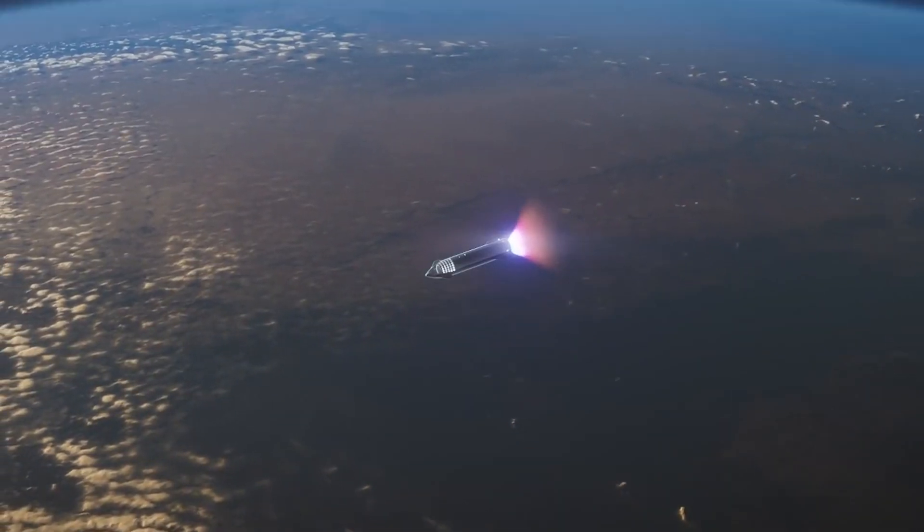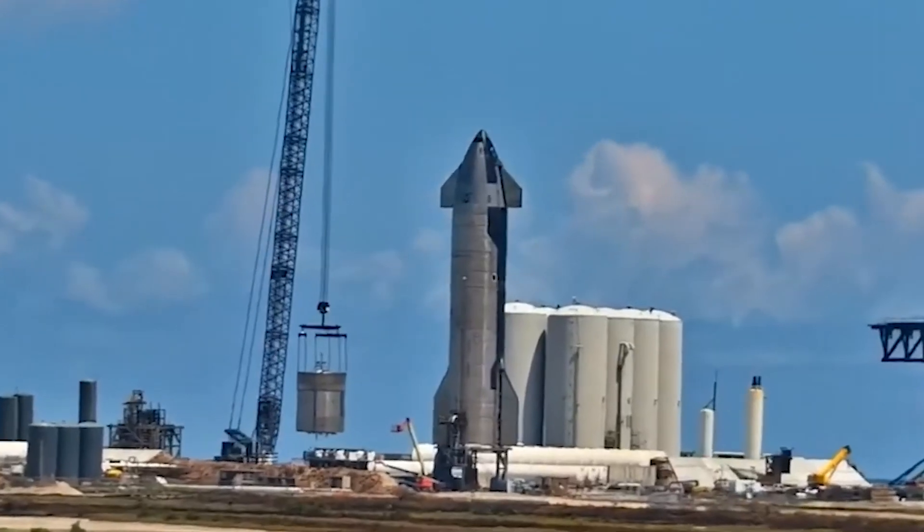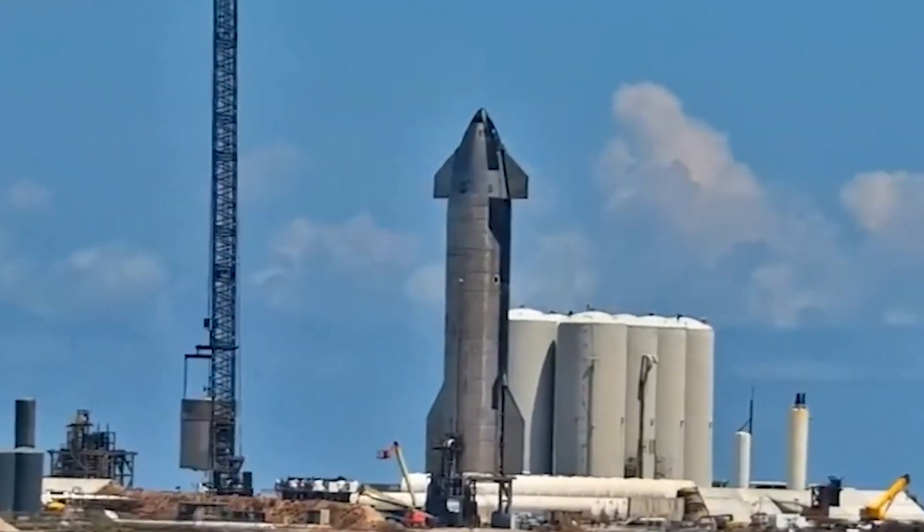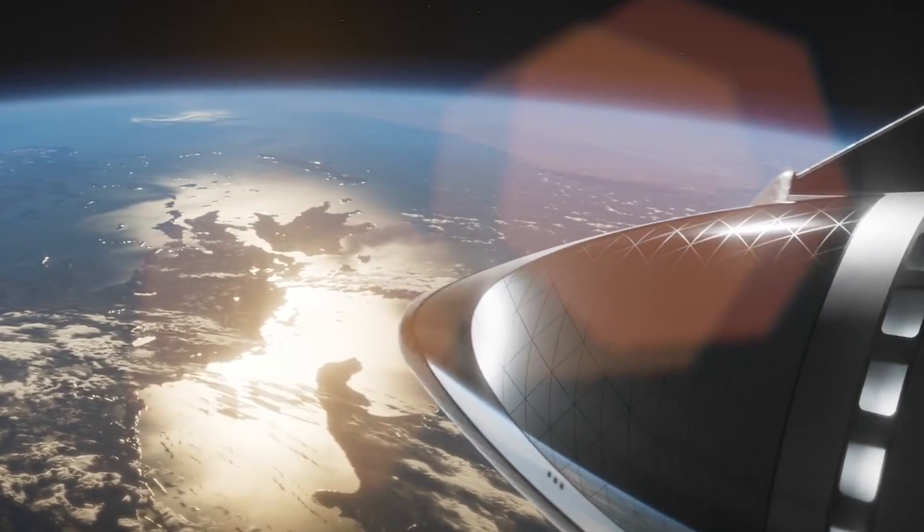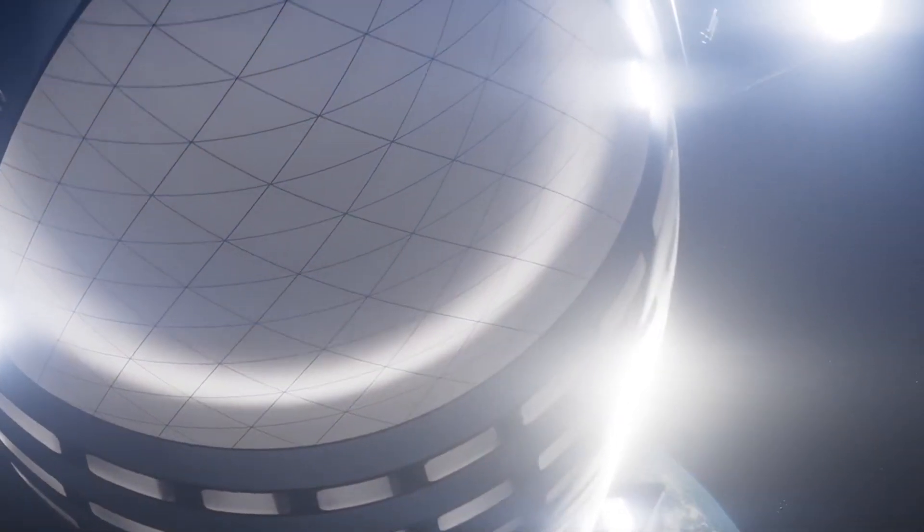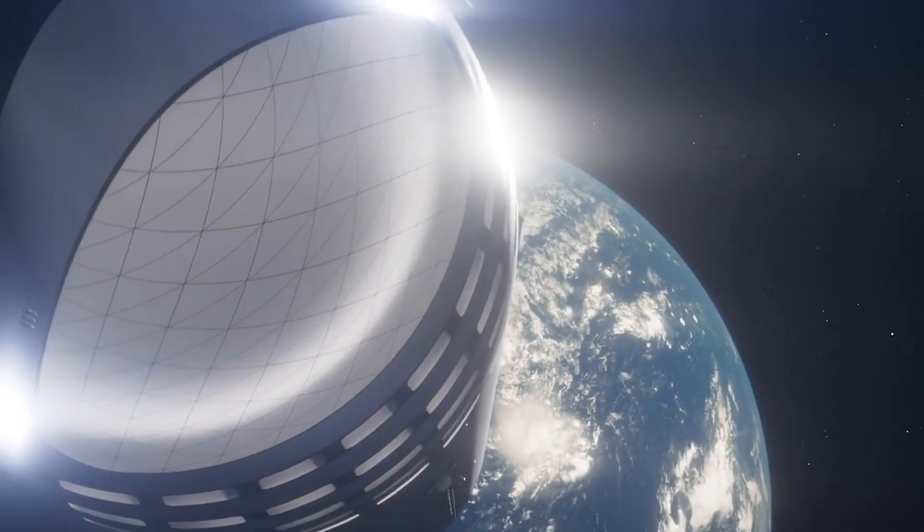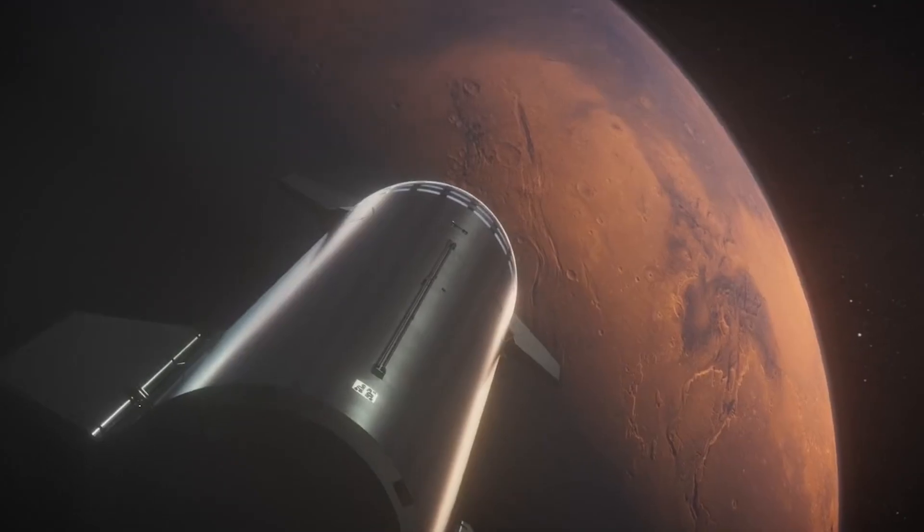After the initial launch, the rocket is responsible for delivering the starship crew capsule to orbit around the Earth. After it has done so, the booster will detach and steer itself towards a soft landing back at the launch pad. While this feat seemed almost impossible at first, SpaceX rockets have been doing it successfully for several years now.